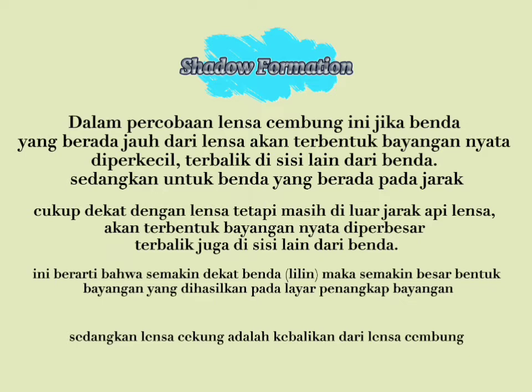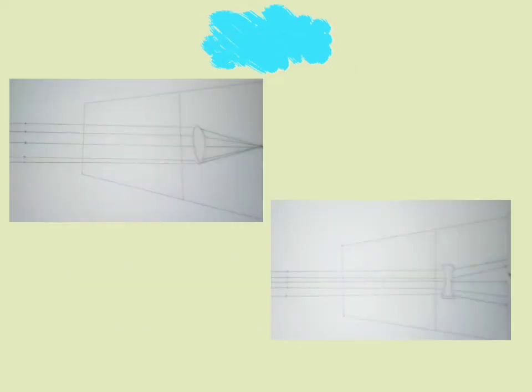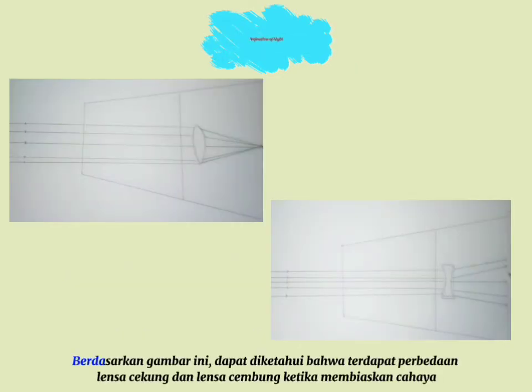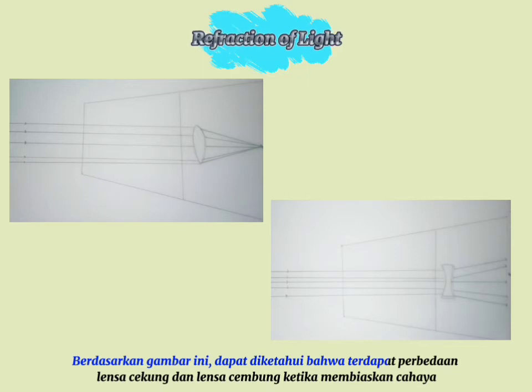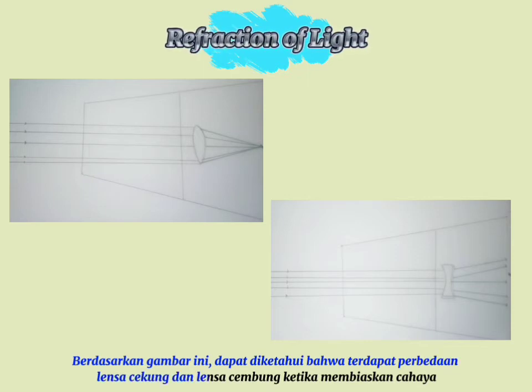The concave lens is the opposite of the convex lens. Based on this image, it can be seen that there is a difference between a concave lens and a convex lens with regard to the refraction line.